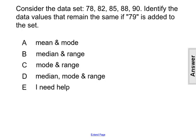The best way to figure out which values would remain the same is to calculate those values before the value of 79 is added to the data set, and then calculate it after that value is added as well and compare them.